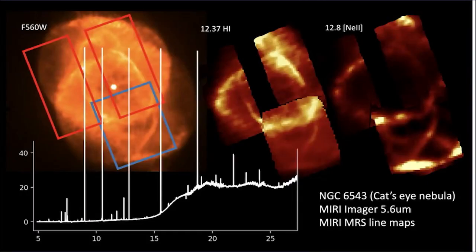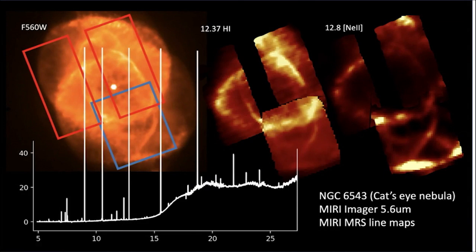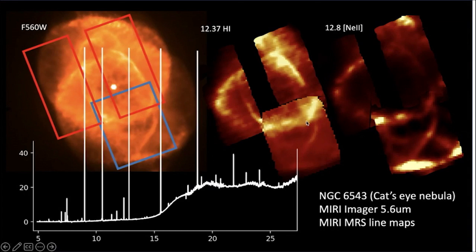This image shows how the MRS is currently functioning — it's of the Cat's Eye Nebula taken during commissioning, with three pointings of the MRS. Because it's an IFU, you get not only spectral information but also spatial information. You can get a spatial map of a single line, such as the H1 line and the Neon 2 line in the Cat's Eye Nebula, and then stitch things together or take multiple observations if you want a wider field of view.